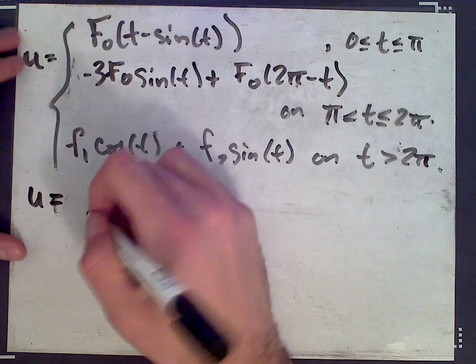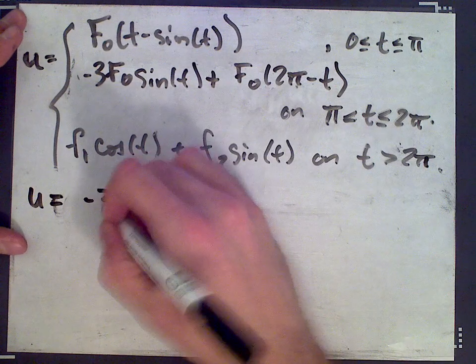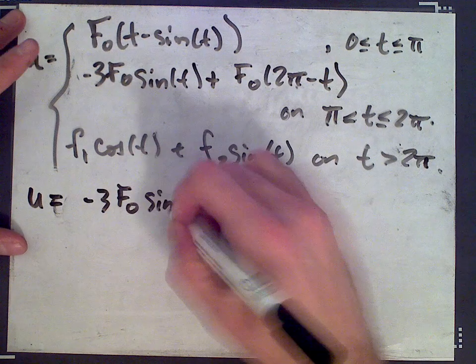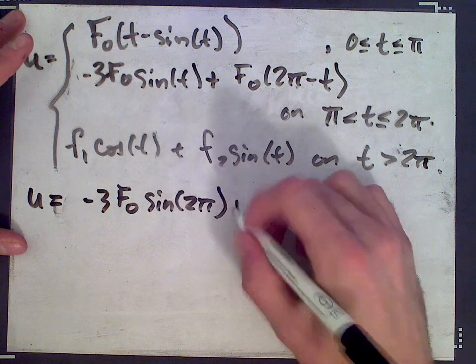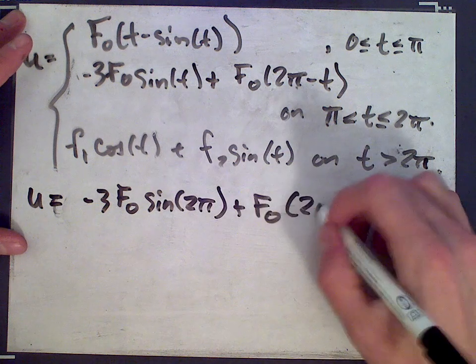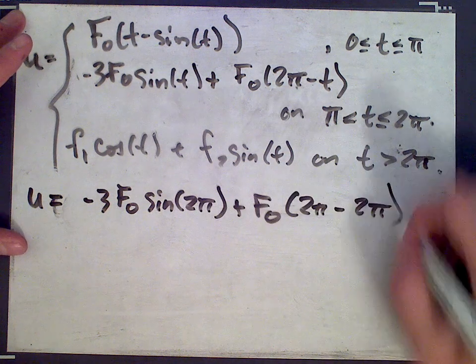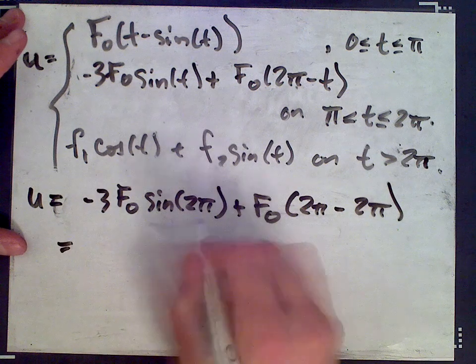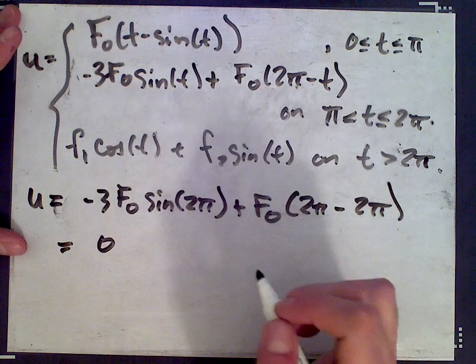I'm going to plug 2π into this second formula here. So negative 3 f0 sine of 2π plus f0 times 2π minus 2π ends up being... sine of 2π is 0, so it's 0.